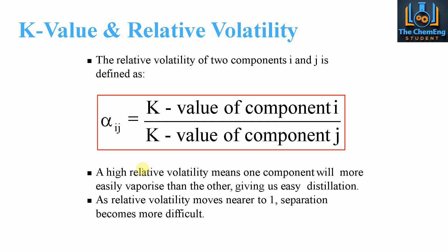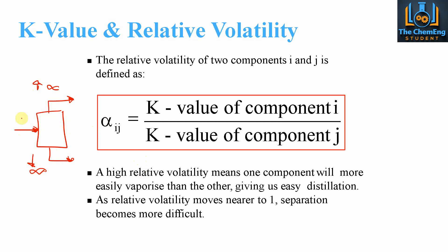When we talk about distillation, we look for components with high relative volatilities. If we have two components, the one with the higher alpha value will rise to the top of the column — that is a high alpha value. The low alphas will fall to the bottom. So the component with the higher relative volatility goes to the top of the column, and likewise, the lower one goes to the bottom.